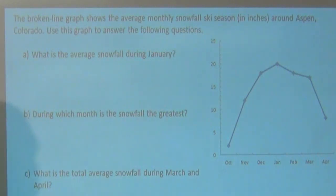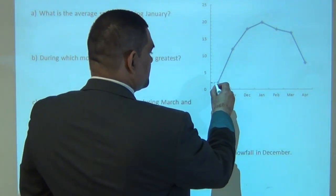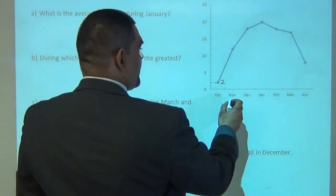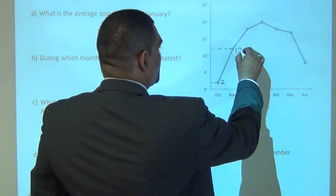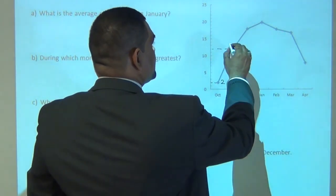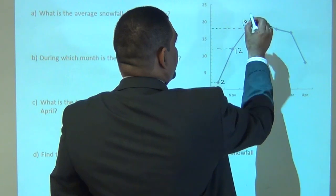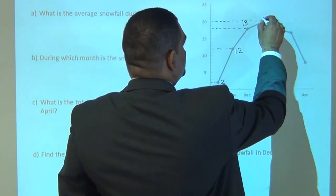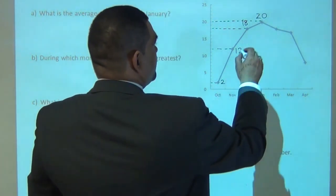Before we answer the questions, let's look at the graph. In October, we have 2 inches of snowfall. In November, we have 12 inches. In December, 18 inches. In January, 20 inches.